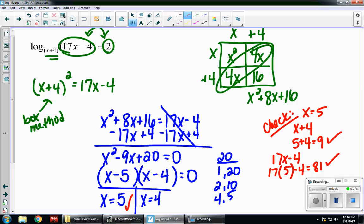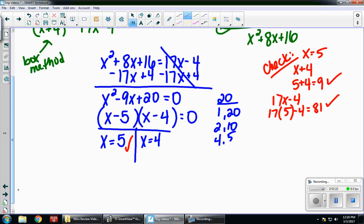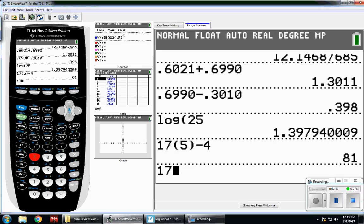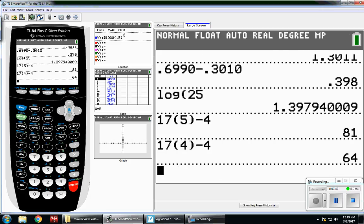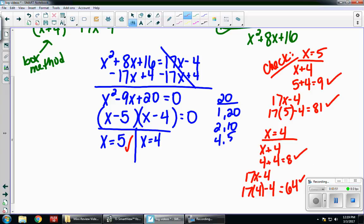I also want to check my x equals 4. So, I'm going to repeat this same process for x equals 4. So, for x plus 4, we have 4 plus 4, which is 8. And then, I have 17x minus 4. So, 17 times 4 minus 4. We end up with 64, which once again is a positive number. So, this checks out. So, my answer is 4 and 5. Both answers work.